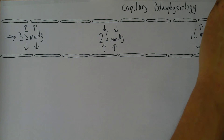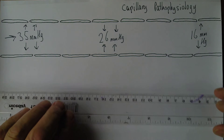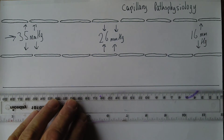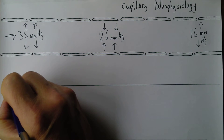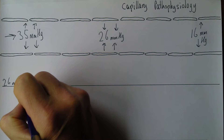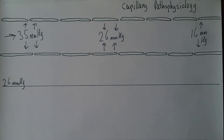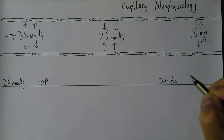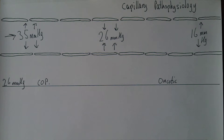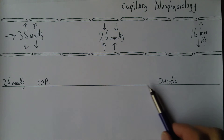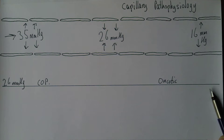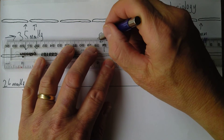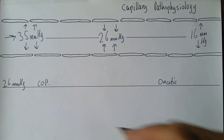We can represent this graphically. Imagine a line at 26 millimeters of mercury representing the colloidal osmotic pressure — what we call the oncotic pressure — generated by the plasma proteins. That is going to be essentially the same all the way along the length of the capillary; it's not going to change significantly.